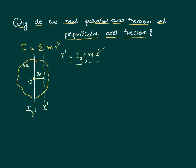This makes it easy to calculate the moment of inertia about a parallel axis. Similarly, suppose I have a situation where I know the moment of inertia of the body about one axis — let this be the x-axis, giving us I_x.